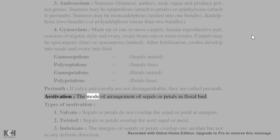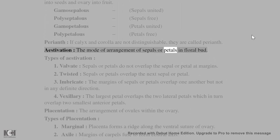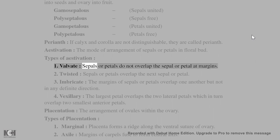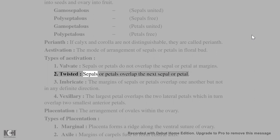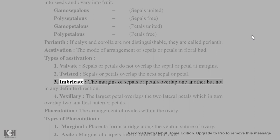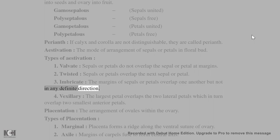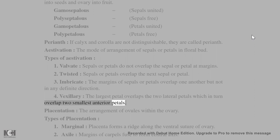Aestivation is the mode of arrangement of sepals or petals in a floral bud. Types: (1) Valvate — sepals or petals do not overlap the adjacent sepal or petal at margins. (2) Twisted — sepals or petals overlap the next sepal or petal. (3) Imbricate — the margins of sepals or petals overlap one another but not in any definite direction. (4) Vexillary — the largest petal overlaps the two lateral petals, which in turn overlap the two smallest anterior petals.